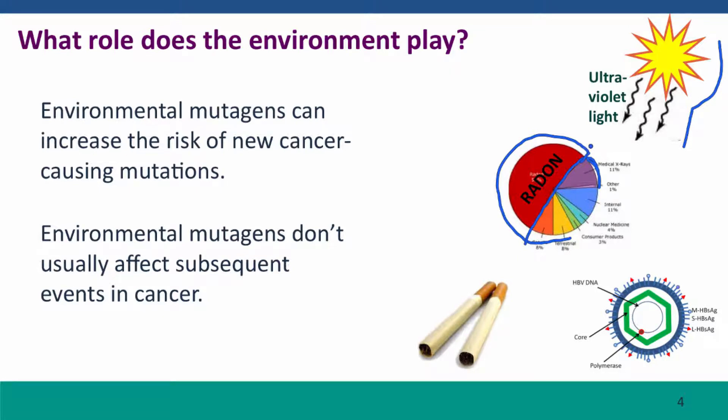In case you don't know, radon gas is produced by many of the rocks in the soils, and in open environments that gas just dissipates. But in closed environments, such as houses — especially basements — that gas is trapped. And it can have a dramatic effect on mutation rates, effects that are as high as the effects of smoking on mutation. So people living in very high radon environments have higher risks of lung cancer because they're breathing in this radioactive gas.